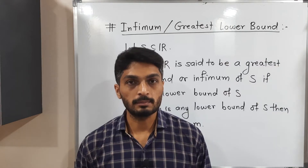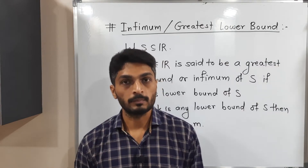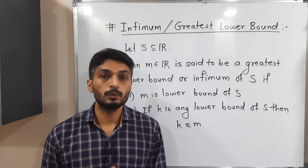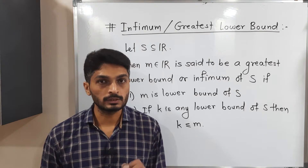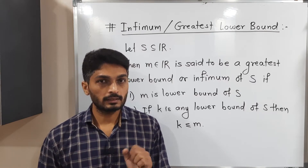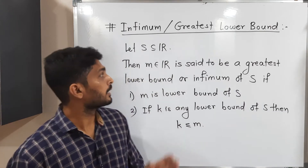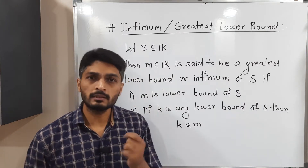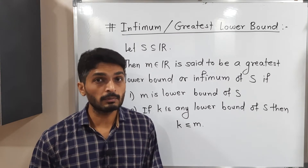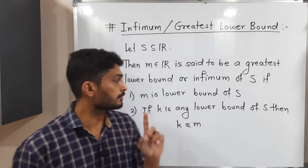Let us discuss this new concept: greatest lower bound. We are already familiar with lower bounds, so now we are going to see greatest lower bound. If you have any set S which is a subset of R, and m is any real number, we say it is a greatest lower bound or infimum if it satisfies two conditions.